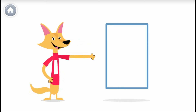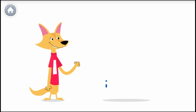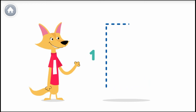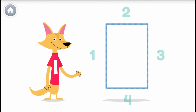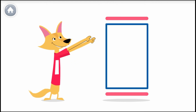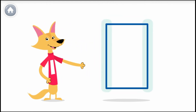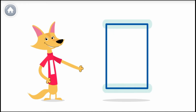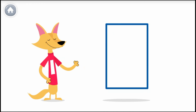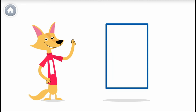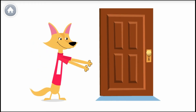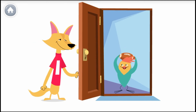Hey! This is a rectangle. A rectangle has four sides and four corners. The opposite sides are parallel. A rectangle usually has two longer sides and two shorter sides. An example of a rectangle is a door.